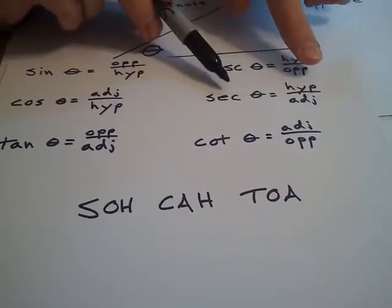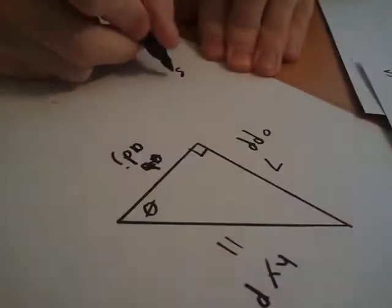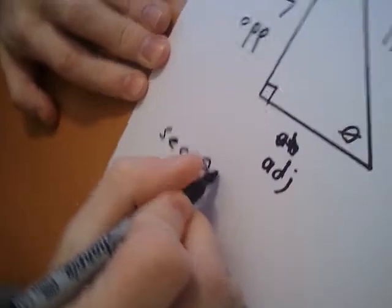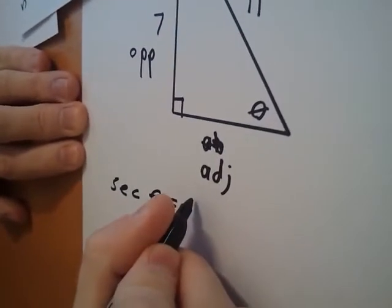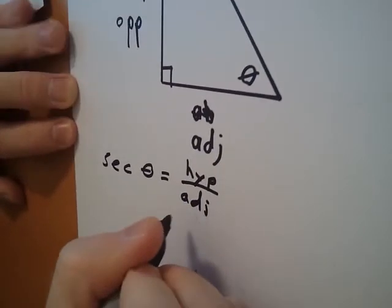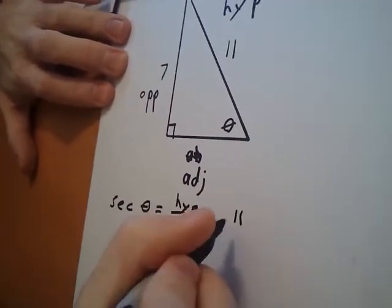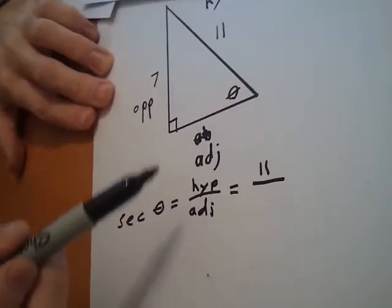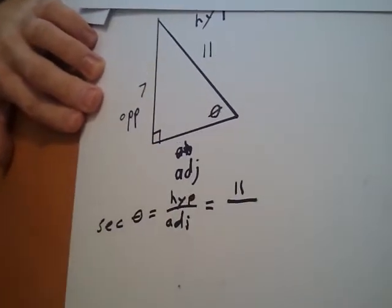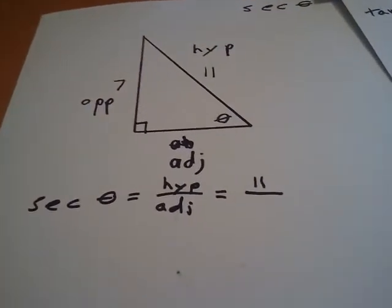Adjacent. And we look back and we see that secant is hypotenuse over adjacent. So my secant of theta is hypotenuse over adjacent. My hypotenuse, aha, we said that's 11. And my adjacent, we don't know. We don't know. Well, is there any way that we can figure out what this missing side is?